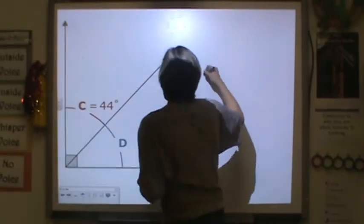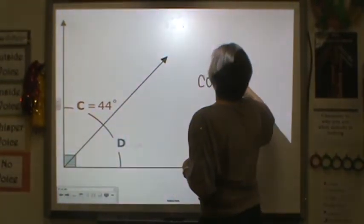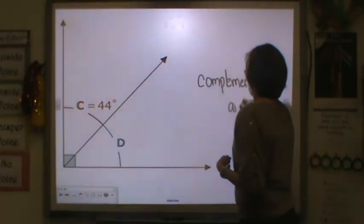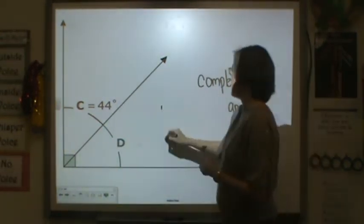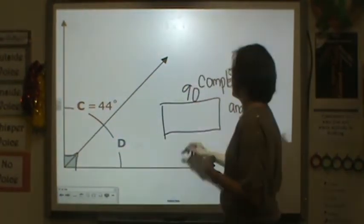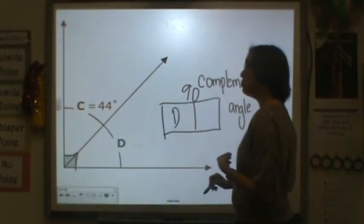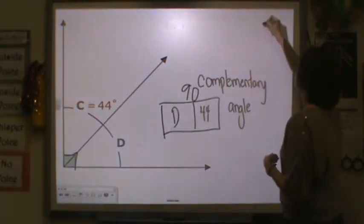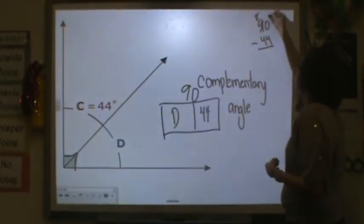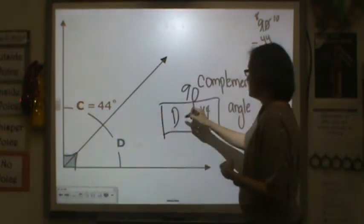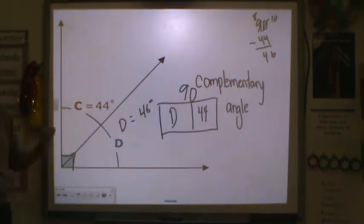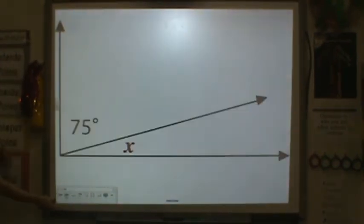Here we have another complementary angle. So if it's a complementary angle, the total is 90 degrees, which is denoted by this box here. So we know that's correct. We don't know d, but we have c is 44. So we just subtract 44 from 90 to get that missing amount. So d is equal to 46 degrees, which makes sense, because 46 and 44 equals 90.